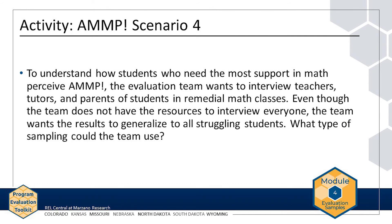To understand how students who need the most support in math perceive AMP, the evaluation team wants to interview teachers, tutors, and parents of students in remedial math classes. Even though the team does not have the resources to interview everyone, they want the results to generalize to all struggling students. The team wants to generalize to the entire population of struggling students, so they should choose random sampling. Because they cannot interview everyone in remedial math classes, the most applicable sampling type is clustered random sampling — randomly selecting one or more remedial math classes and interviewing the teachers, tutors, and parents of students in those classes.